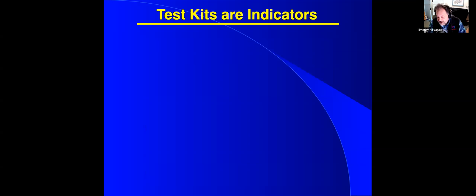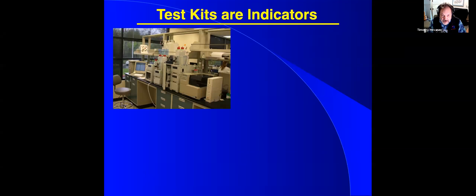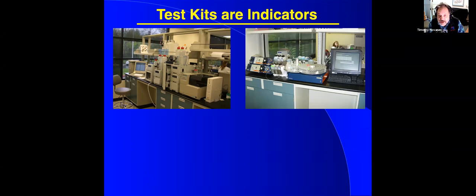But the main thing is that these test kits, which range from $8, $20, $30, even if you get a handheld digital one, $50, they are indicators. This is ion chromatography. It's $100,000 that you're looking at in laboratory equipment there. This is flow injection analyzer, again, about $60,000. Those are analytical instruments.